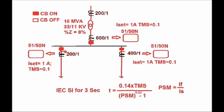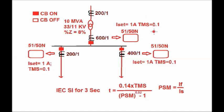For Feeder A, the CT ratio is 200/1, the relay current setting in secondary terms is 1 A, and TMS is 0.1. For Feeder B, the CT ratio is 400/1, the current setting is also 1 A in secondary terms, and TMS is 0.1. For the LV incomer relay, the full load current on the LV side is 525 A; considering 10% margin, it becomes 592 A, so ISET is set to 1 A secondary (600 A primary), and TMS is 0.1.